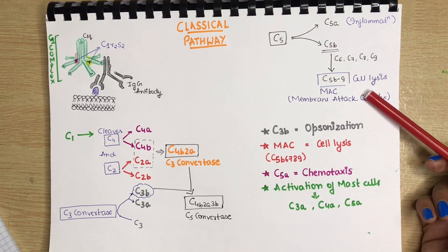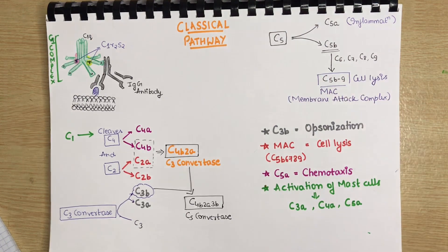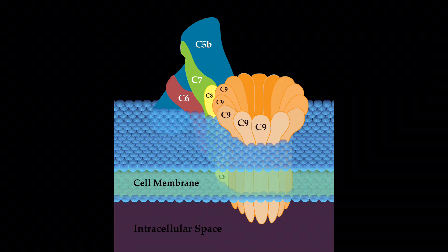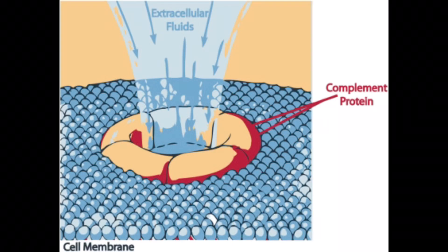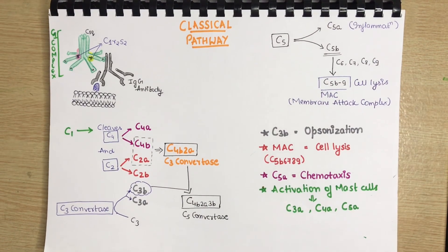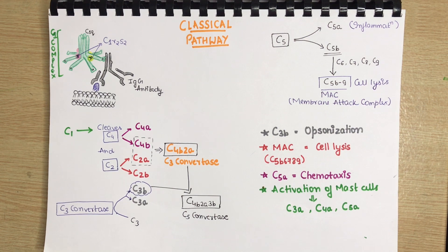Let me show you a picture of this MAC complex. So, as you saw in the picture, the MAC leads to the pores that disrupt the cell membrane of target cell hence leading to cell lysis and cell death.